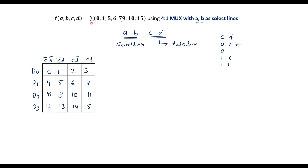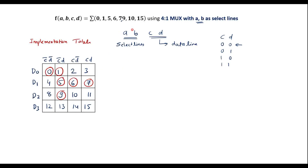Looking at the given function, the minterms are 0, 1, 5, 6, 7, 9, 10, and 15. For these minterms, the output value is 1. Put circles for these minterms in the implementation table: 0, 1, 5, 6, 7, 9, 10, and 15.